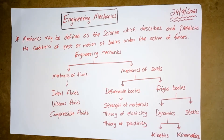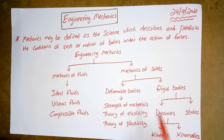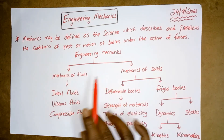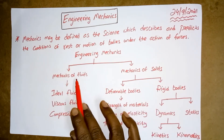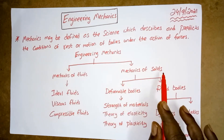So this is the simple classification of Engineering Mechanics. We came to know the definition and the classification. Engineering Mechanics is classified into two types: first is mechanics of fluids and mechanics of solids.